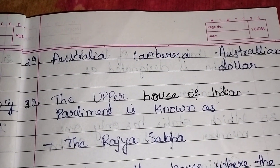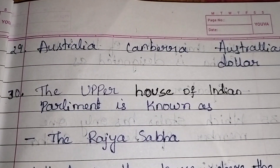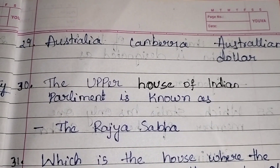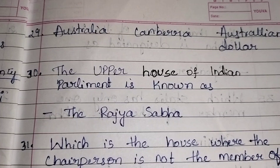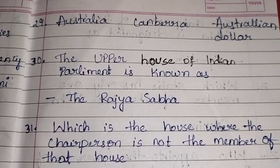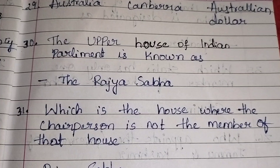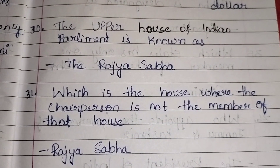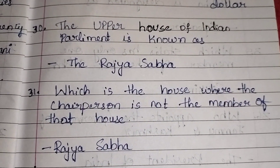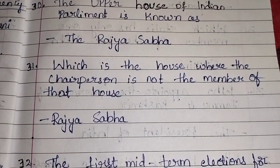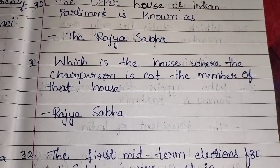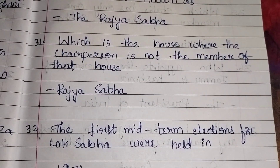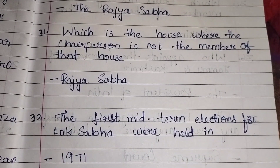The upper house of the Indian Parliament is known as the Rajya Sabha, which is the house where the chairperson is not a member of that house. The first midterm elections for Lok Sabha were held in the year 1971.